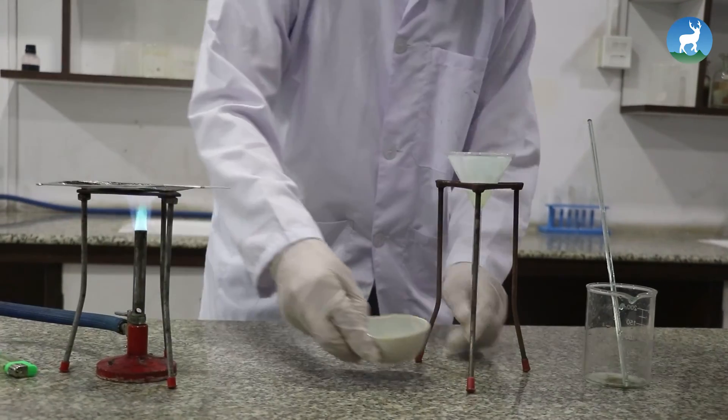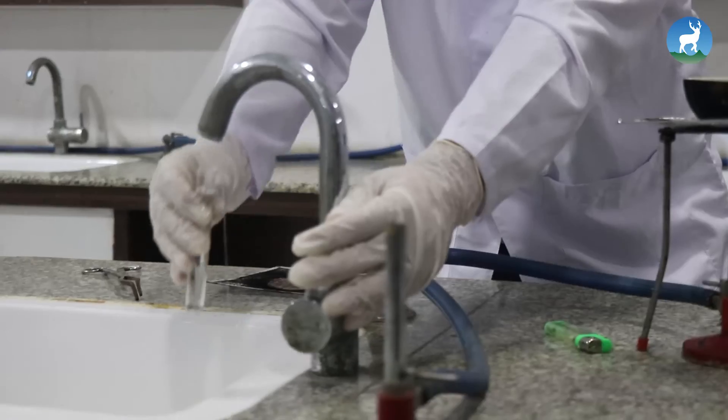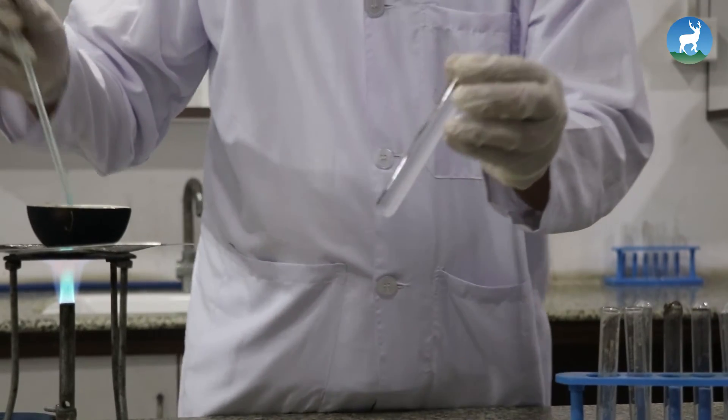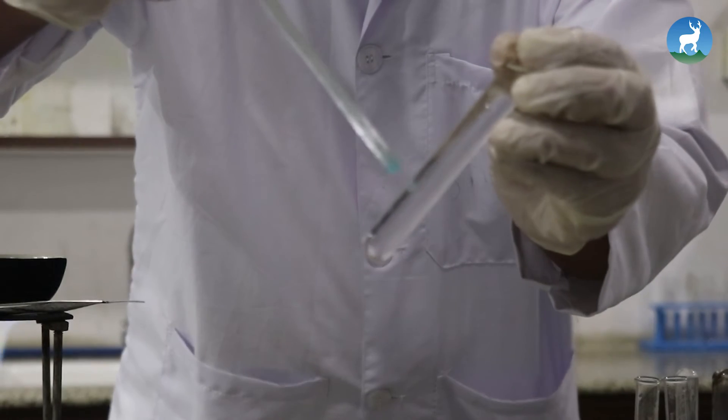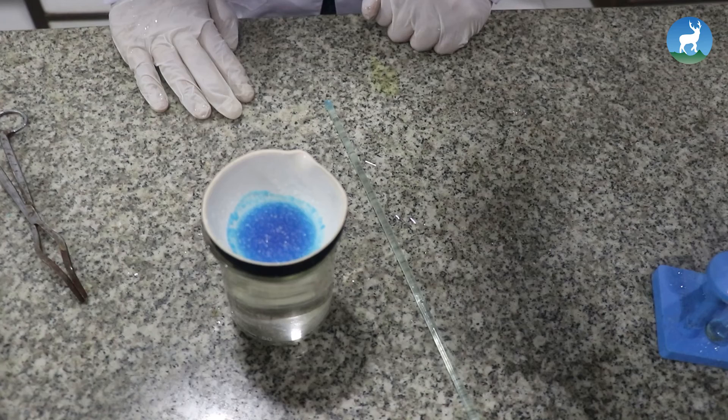Evaporate the filtrate taken in the basin for some time. The crystallization point is checked by putting a drop of boiling solution from the basin on the outer wall of a test tube containing cold water. Appearance of mini crystals instantly indicates the crystallization point has been reached.